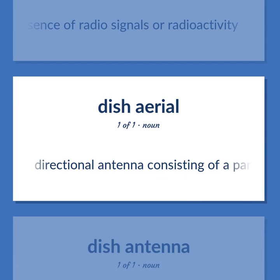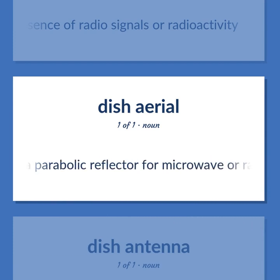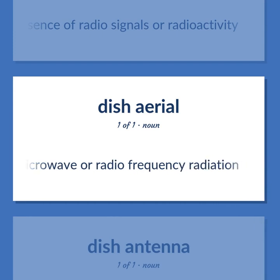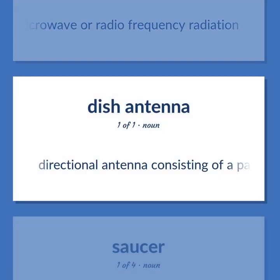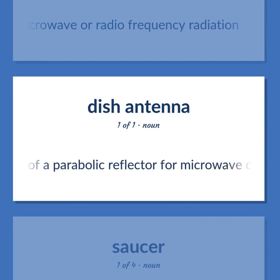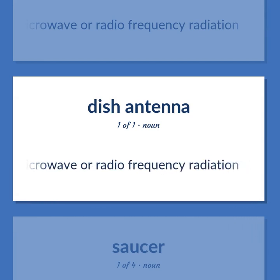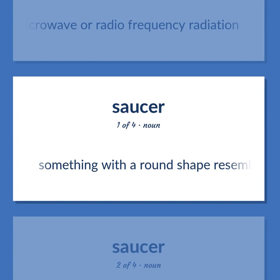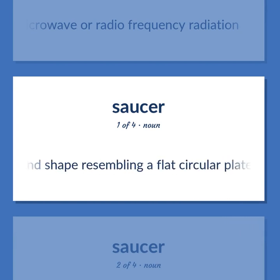Dish: Directional antenna consisting of a parabolic reflector for microwave or radio frequency radiation. Also, something with a round shape resembling a flat circular plate.